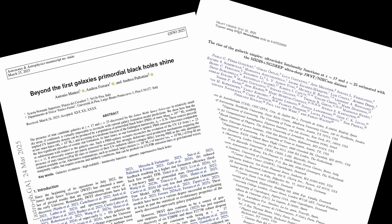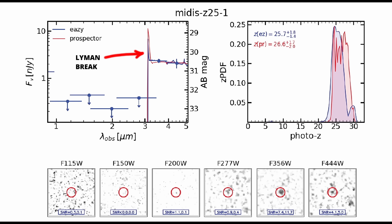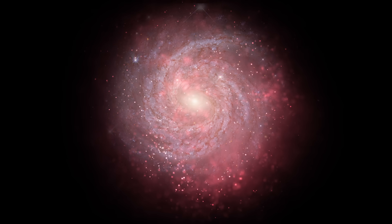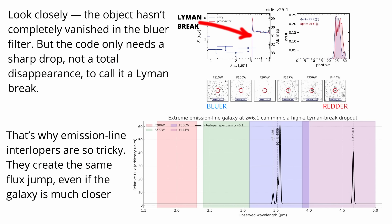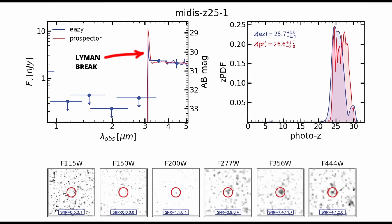The researchers, however, stress caution. These are photometric redshifts, estimated from broadband colors and the Lyman break. They could, in principle, be dusty galaxies at a much lower redshift, or extreme emission line interlopers. But the fit strongly favors the high-redshift solution.